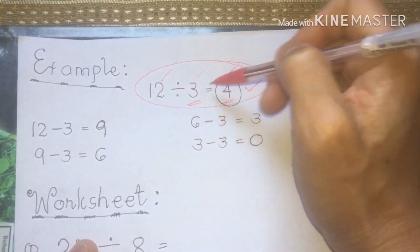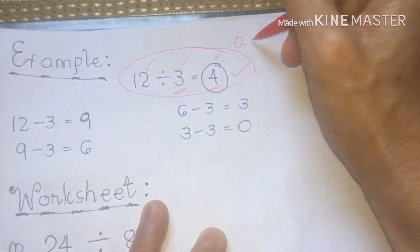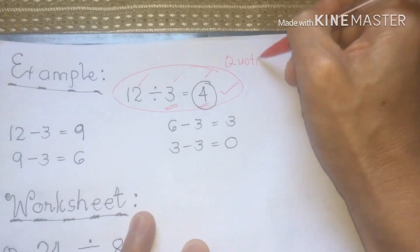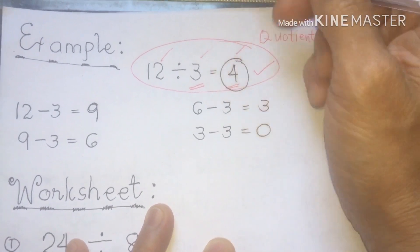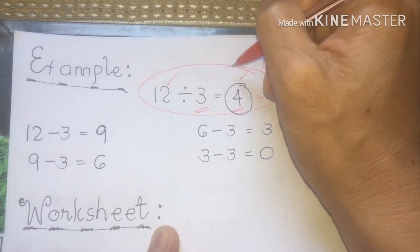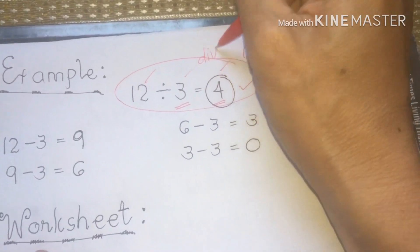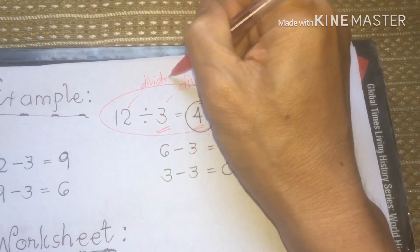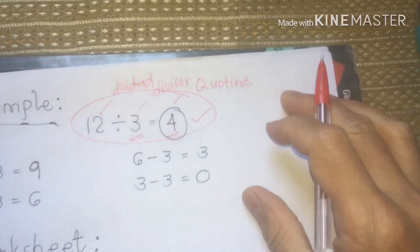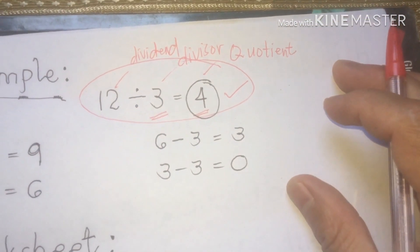12 divided by 3 is equal to 4. This is our given. 4 is what we call our quotient. So that you will know, my dear students, 3 is what we call our divisor. 12 is our dividend. Here, class, we know the basic parts of division.